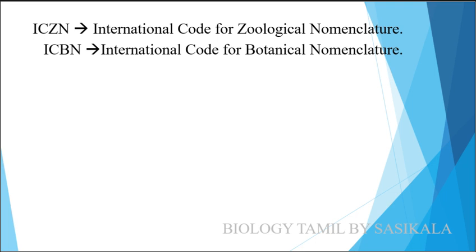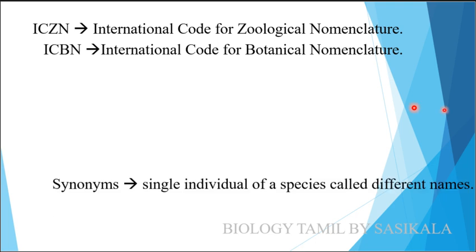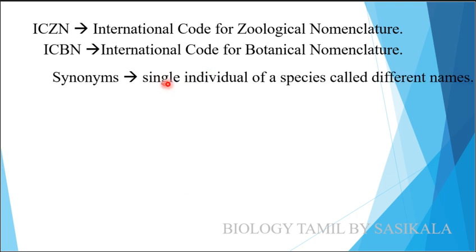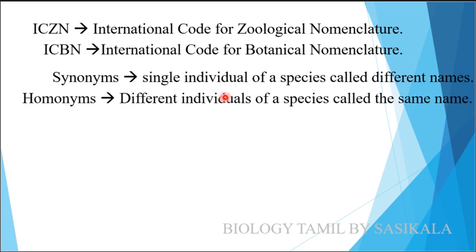There are two important terms: Synonyms and Homonyms. Synonyms means one species has more than one name — a single individual of a species is given different names. Homonyms means different species are given the same name — different individuals or species called by the same name.